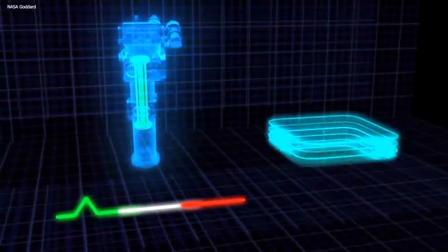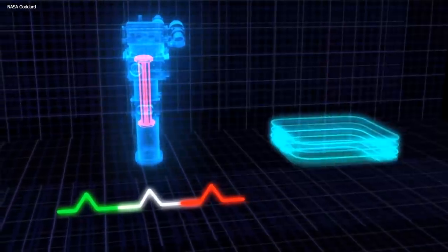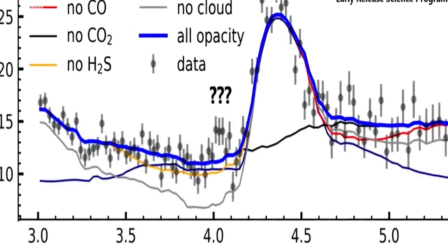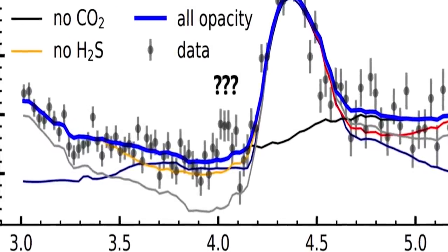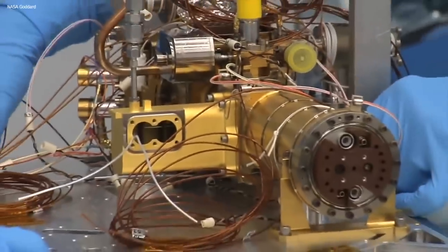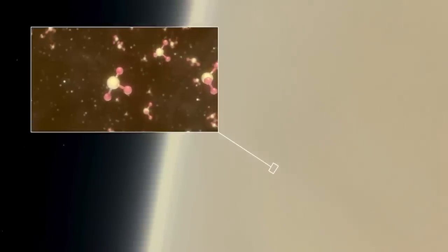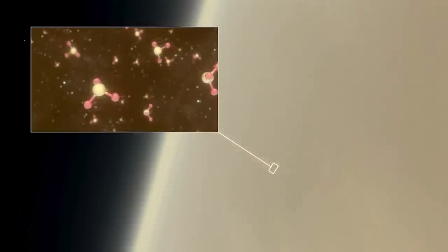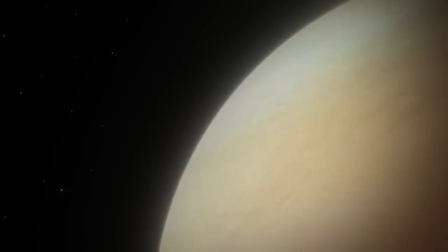However, not everyone is convinced that the LNMS was sensitive enough to detect phosphine. Planetary scientist Mikhail Zolotov of Arizona State University argues that the LNMS data may have detected a mixture of phosphorus-rich gases and hydrogen sulfide instead of phosphine. If the LNMS did detect phosphine, it would suggest a much higher abundance of the gas than what was found by the MIT team, which is a major red flag in itself.